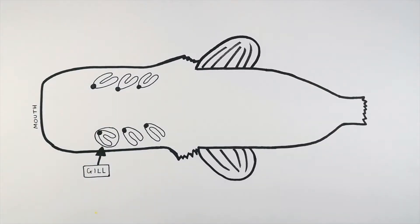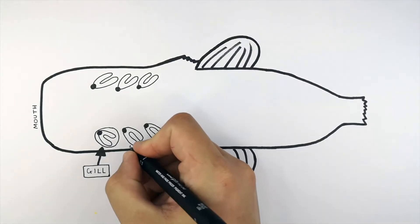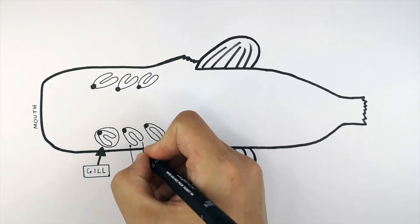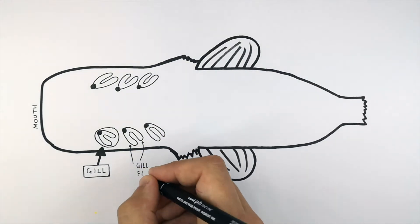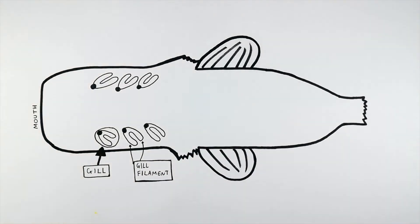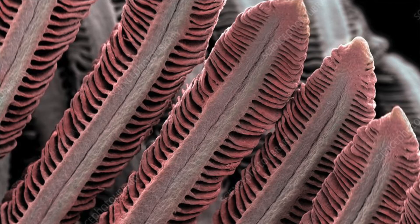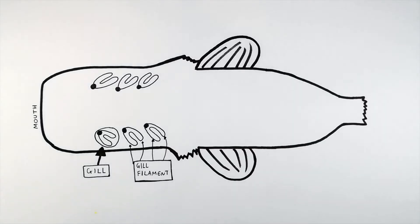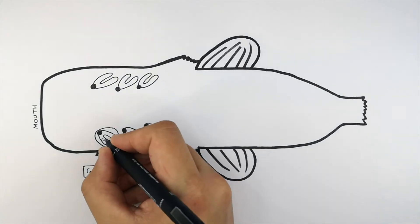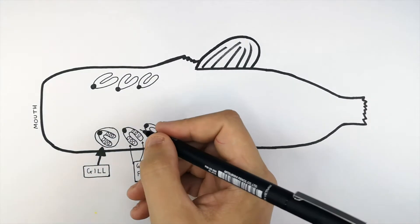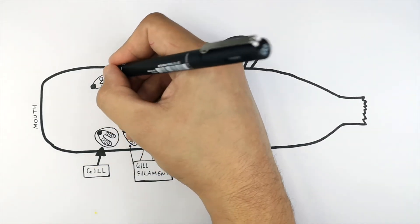This is one gill, and one gill is made up of many gill filaments. These here are the gill filaments. The gill filaments are arranged stacked on top of each other to increase the surface area. The gill filaments are covered in these structures here, which are called lamellae.